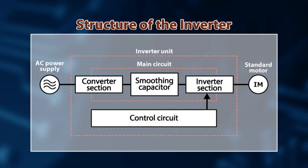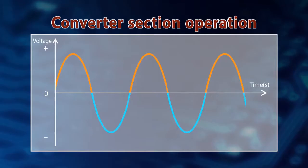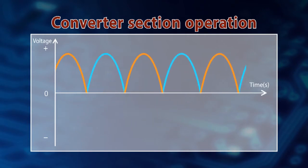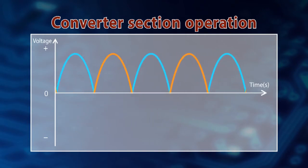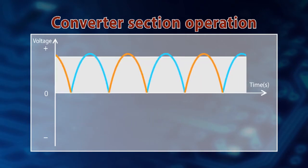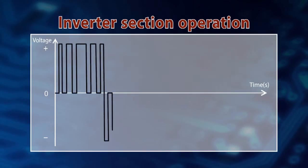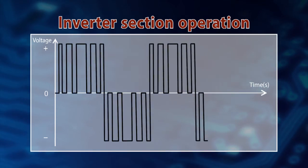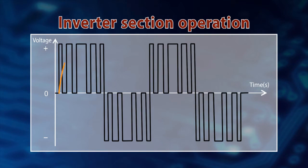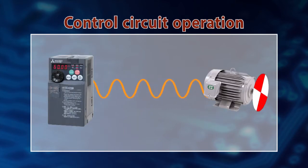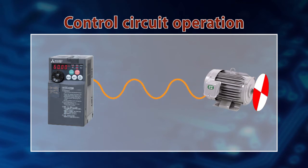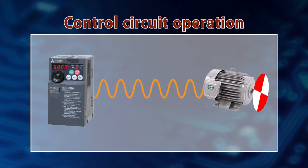First, the converter section rectifies AC power supply and converts it to a DC power supply. Next, the inverter section converts the DC power supply to a pulse-like pseudo-alternating current. And the control circuit section changes the pulse frequency to control the motor rotational speed.